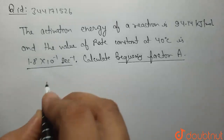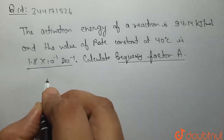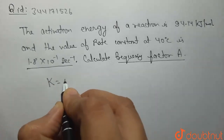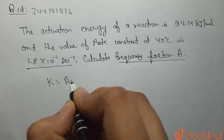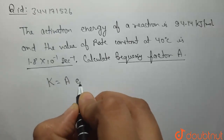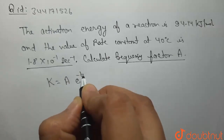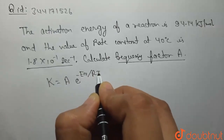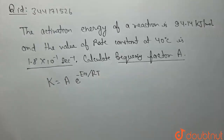अगर Arrhenius theory हमें याद होगी, तो उसका एक relation है: k = A·e^(−Ea/RT).